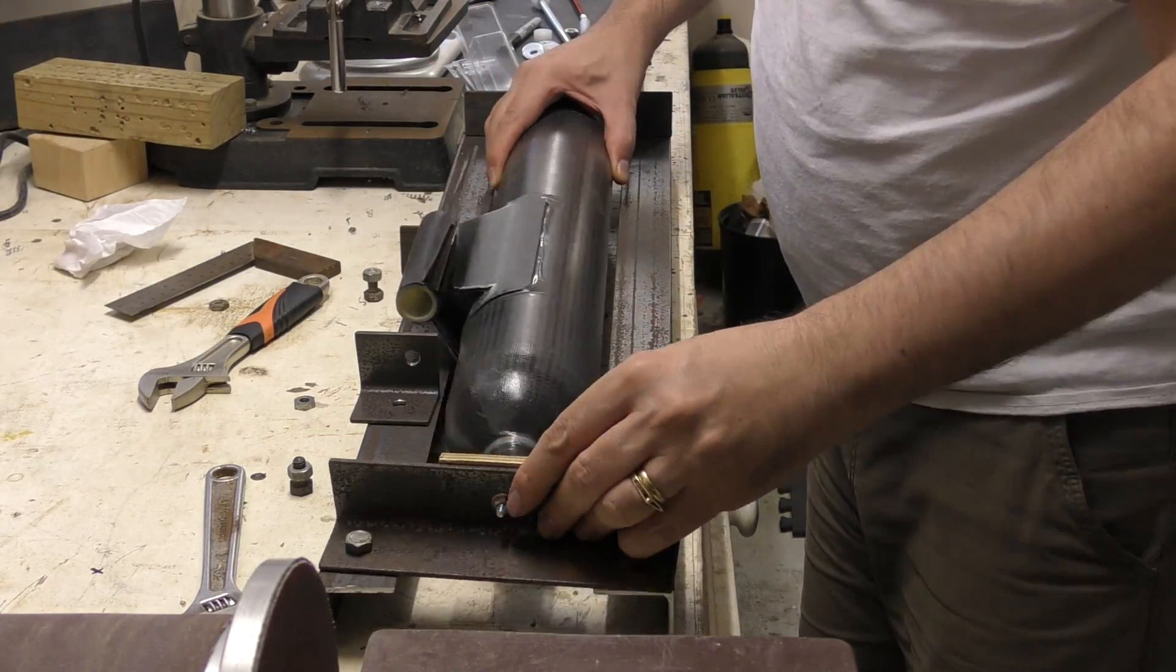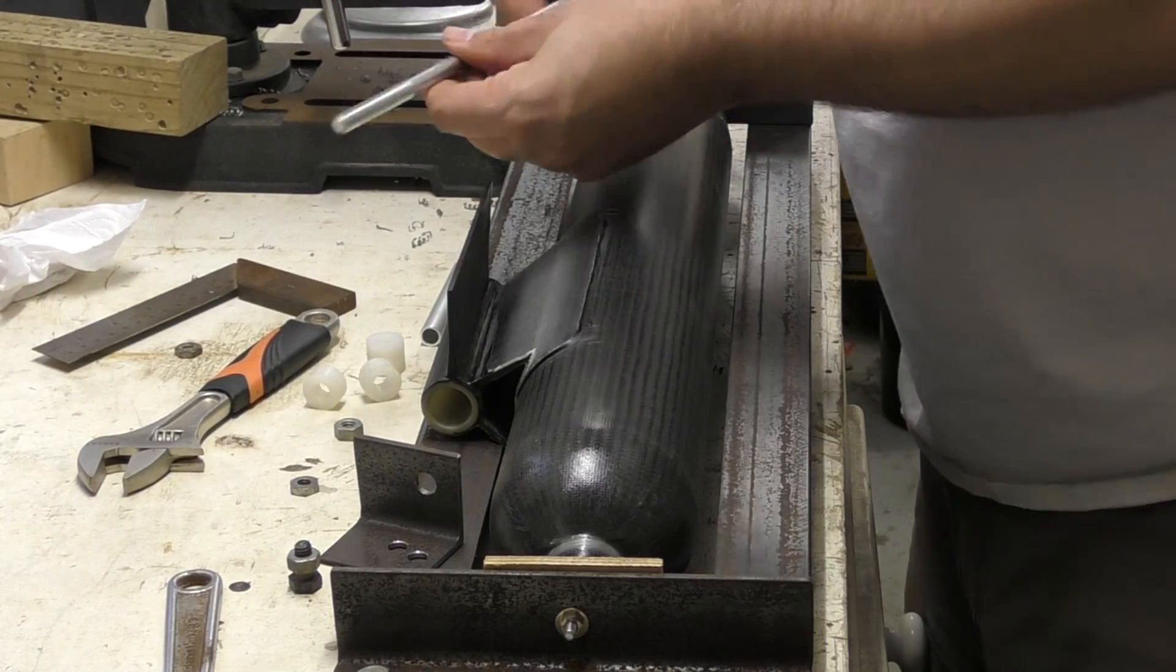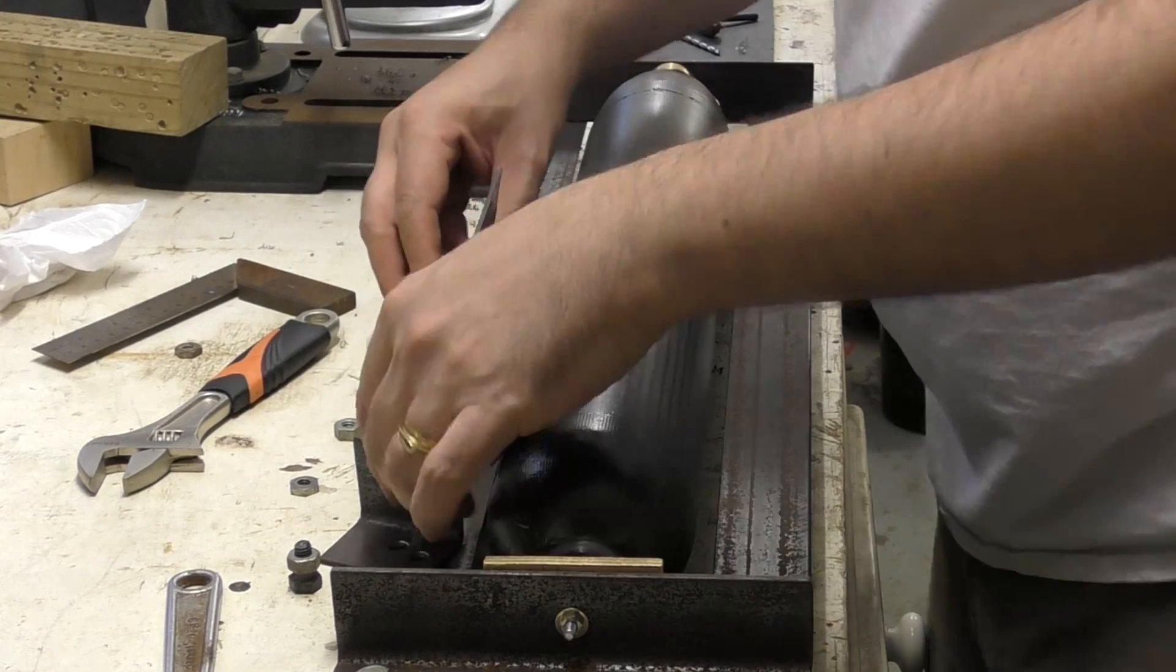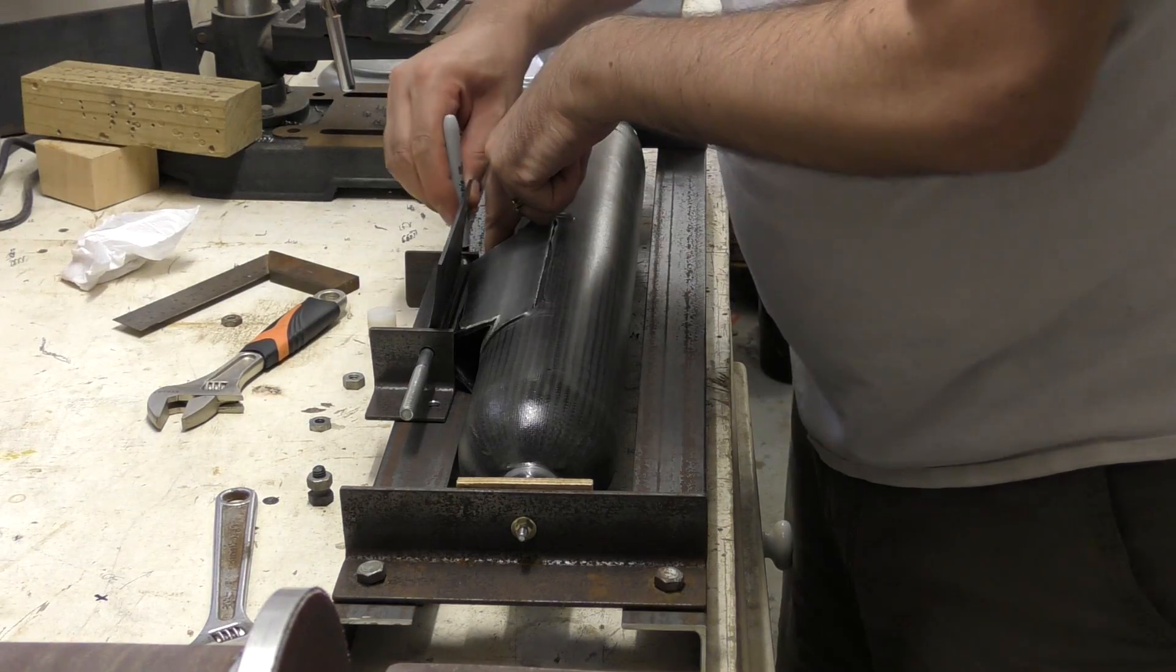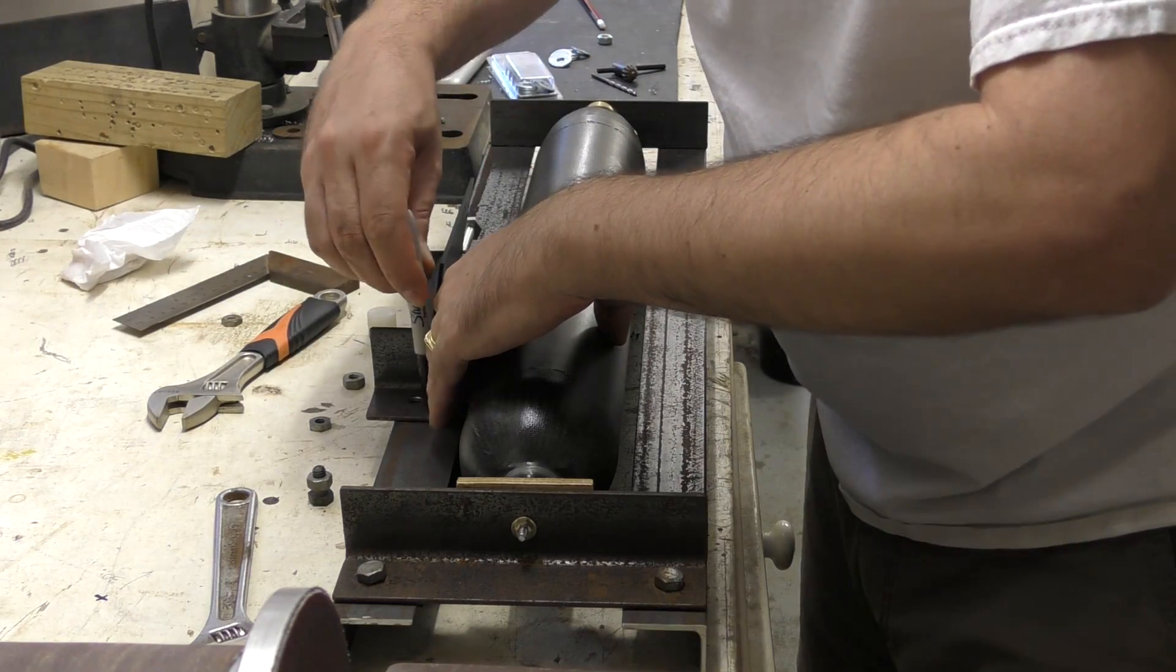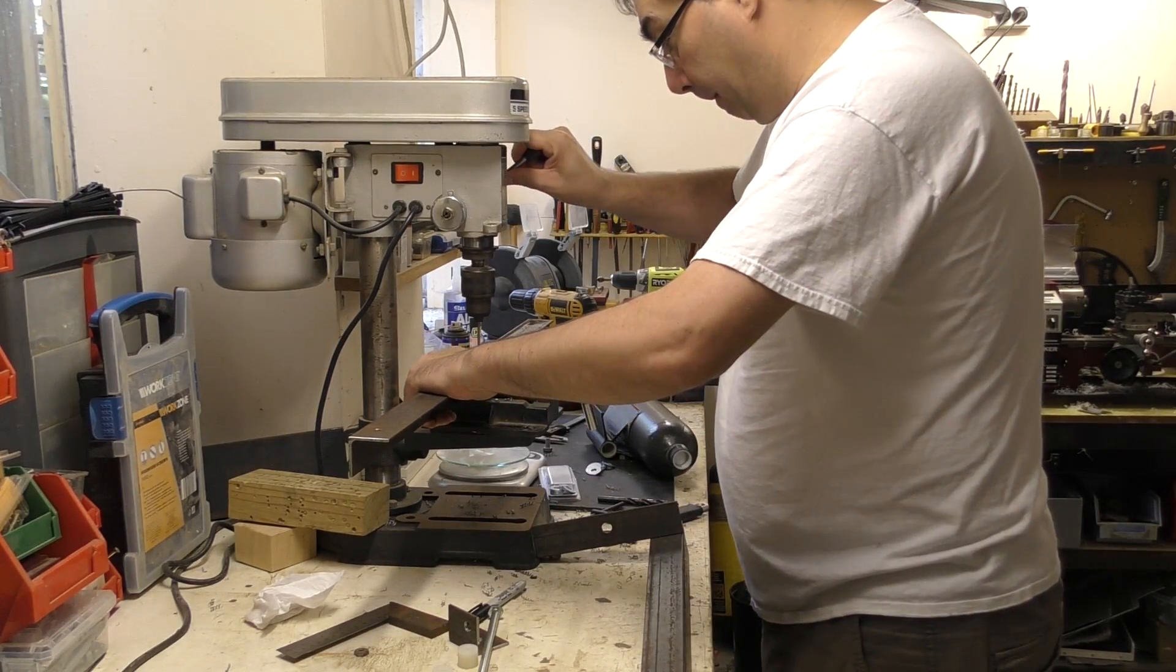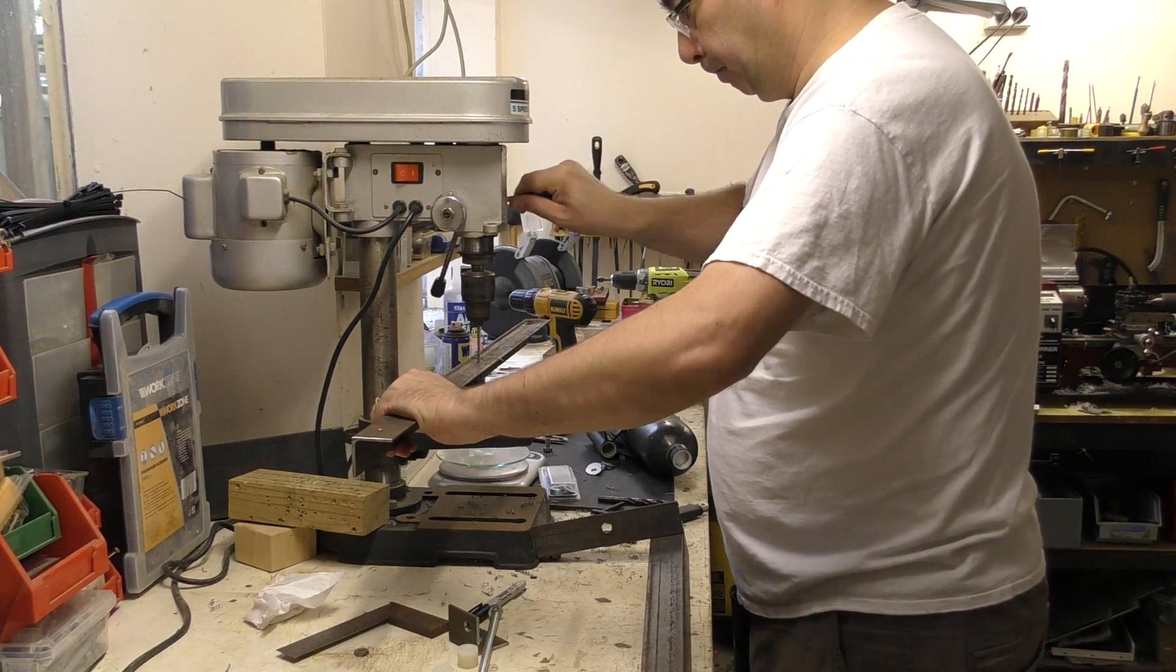Now we need to mount the bracket to the test frame. For this we are using a long bolt with some spacers to make sure the bolt goes down the middle of the tube. Then we drill some holes in the test frame to mount a couple of angle brackets.